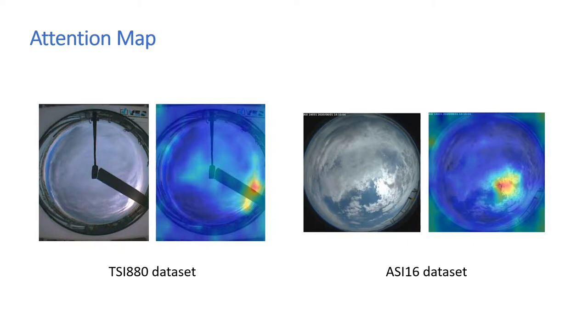We also visualize the attention maps from our nowcasting network. We can find that the highlighted regions in the attention maps mainly focus on the sun regions of the sky images.